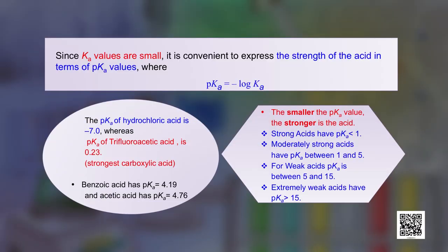Comparing pK_a values gives an idea of relative acidity. For example, hydrochloric acid has pK_a of −7.0, trifluoroacetic acid is 0.23 (the strongest carboxylic acid), benzoic acid is 4.19, and acetic acid is 4.76. The smaller the pK_a value, the stronger the acid. Strong acids have pK_a less than 1, moderately strong acids between 1 and 5, weak acids between 5 and 15, and very weak acids greater than 15.